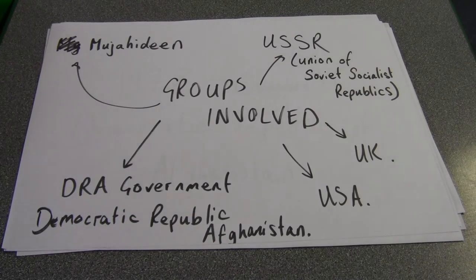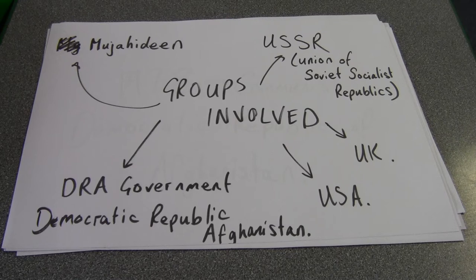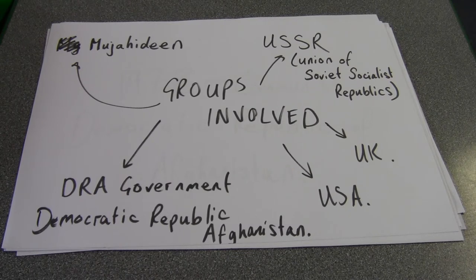Before we start, we need to know who the major groups are involved in this conflict. You can see from this paper that I've split it into different sections. We've got the USSR, or the Union of Soviet Socialist Republics, otherwise known as modern-day Russia. We've got the United Kingdom and the USA. We've got the DRA government — the Democratic Republic of Afghanistan's government — and we've also got a group called the Mujahideen, which we'll talk more about later.